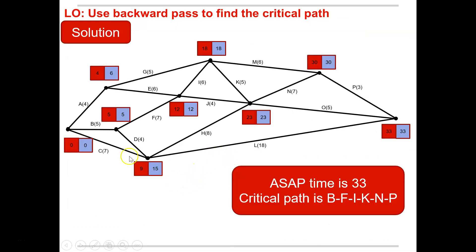Alright, so here's the solution. Your network should look something like this with your forwards and backwards path completed and you could use the forwards and backwards path to find that your critical path or your ASAP time is B, F, I, K and P. And if any of these activities here were delayed, the whole path, the whole project would be delayed. It's important to note that in each of your examples.